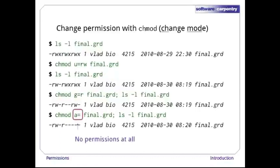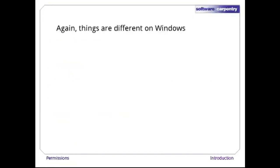The 'a' signals that we're changing permissions for all, and since there's nothing on the right of the equals, all's new permissions are empty. Those are the basics of permissions on Unix. As we said at the outset, though, things work differently on Windows.